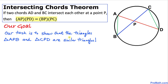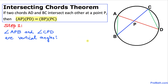Our action plan is to show that triangles APB and CPD are similar triangles. Here's the beginning of our formal proof. Let's focus on these angles: angle APB and angle CPD.